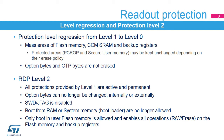Readout protection level 2 provides the same protection as level 1, but the protection becomes permanent. Option bytes cannot be modified, so once the RDP protection is set to this level, there is no way to modify it and level regression with mass erase is no longer possible. This level must only be considered in the final product when the development stage is completed. Note that to ensure there are no back doors, this protection cannot be bypassed even at the ST factory.